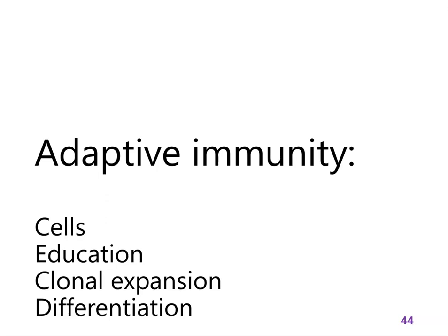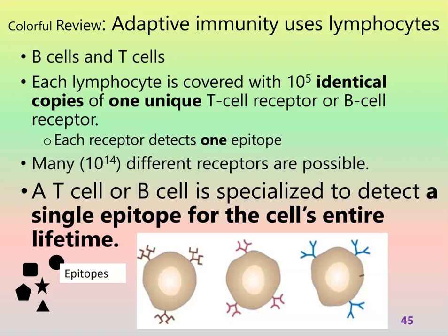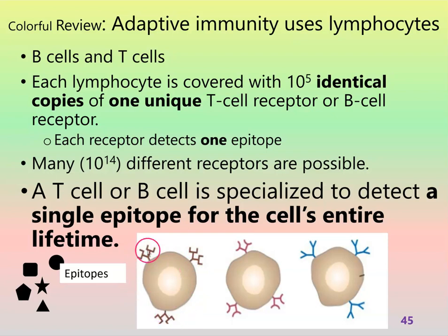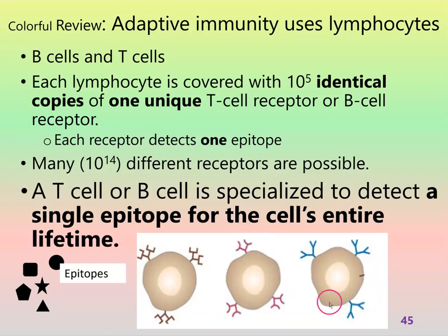Hello again. Let's keep going with adaptive immunity — there is a lot more to see. Here we are again at the slide about lymphocytes. We draw three lymphocytes or more and we are careful to draw their receptors. Their receptors will be identical within one lymphocyte. A real lymphocyte has a hundred thousand receptors and they're all the same. But the next lymphocyte has a hundred thousand copies of a different receptor, and so on.